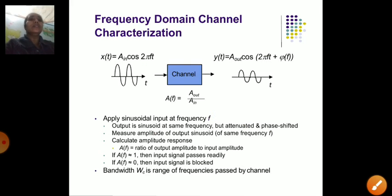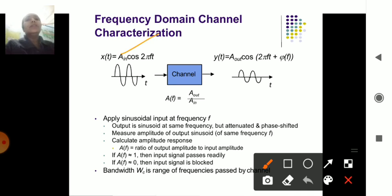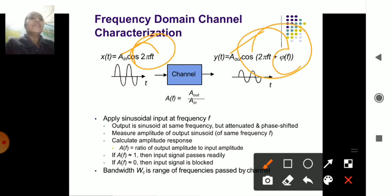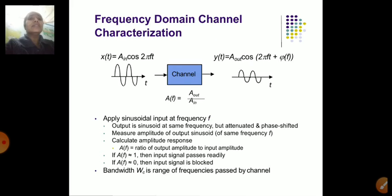Today's session covers frequency domain channel characterization. The most important aspect in channel transmission is frequency — at what frequency the information gets transferred. When frequency is lower, you cannot transfer data; when it is higher, you can. The amplitude is an important factor: when amplitude is higher, data gets transferred more easily. A phase factor (φ) is also present — when transferring from one end to another, external noise introduces a phase component φ into the signal, along with amplitude and cos(2πft).